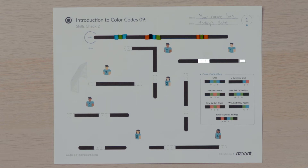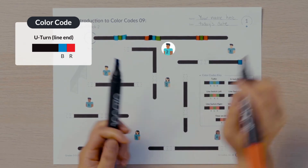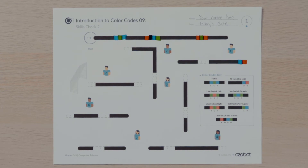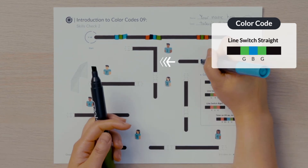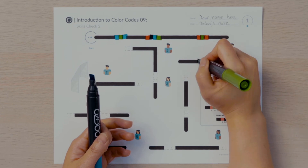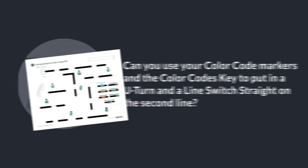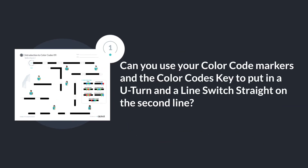The second line Ozobot will travel on has two missing color codes. What color code do you think will go on the line end? That's right — a U-turn will go on the line end to guide Ozobot in the correct direction past player two. Once Ozobot is traveling towards player two, what direction will it need to move to go past player two and sense the next line? Ozobot will need to move straight, so a line switch straight color code is missing. Can you use your color code markers and the color code's key to put in a U-turn and a line switch straight on the second line?